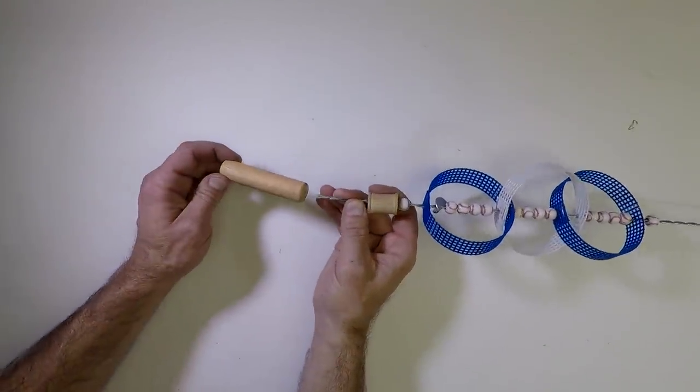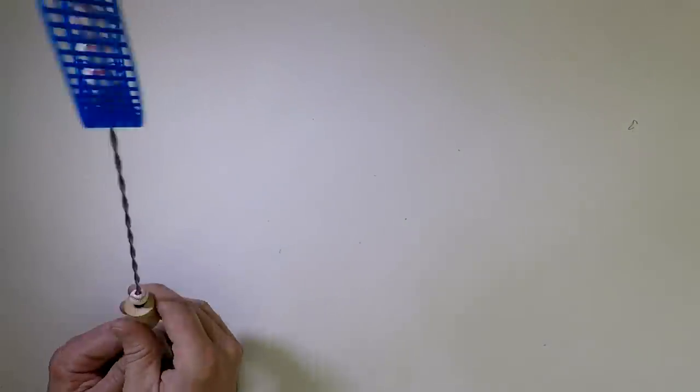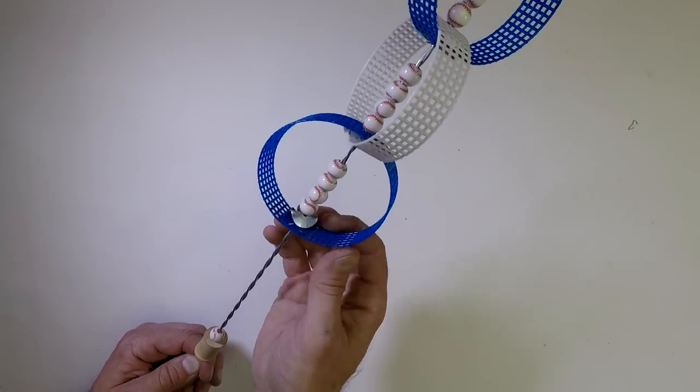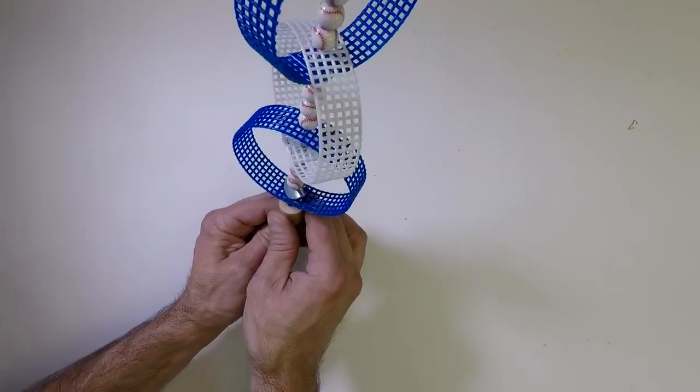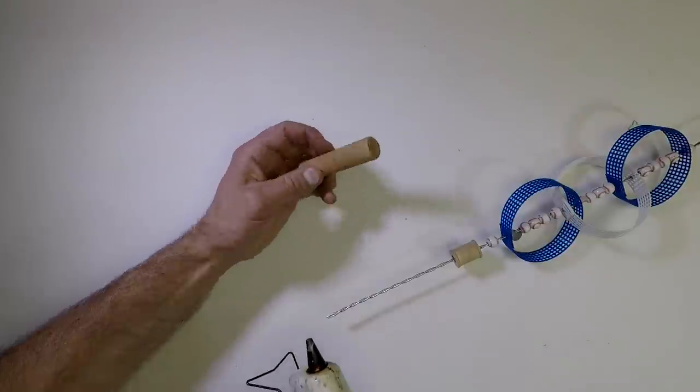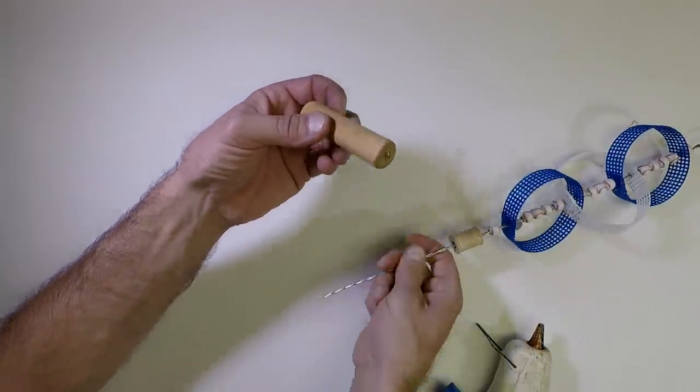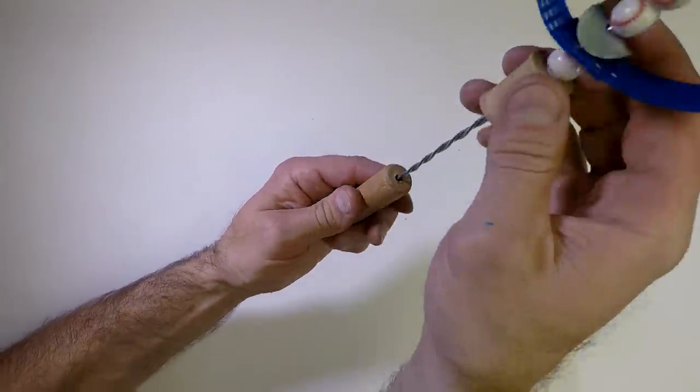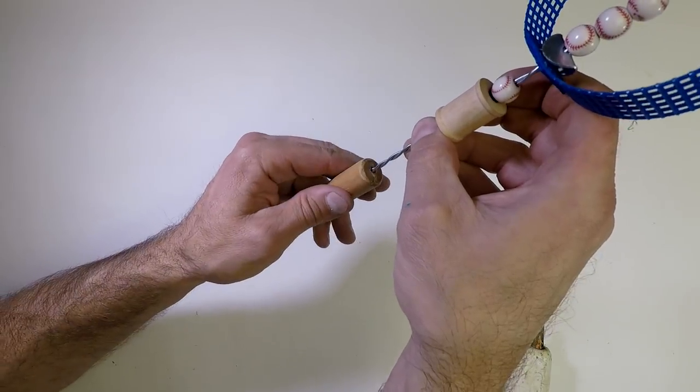Now, before we glue in the handle, we want to make sure that the toy actually works. So, this should slide down. If it doesn't, you may need to drill your holes slightly larger, or you may need to make an adjustment to your washer to get it to slide correctly. This one here actually looks pretty good. So, we'll go ahead and put some glue in there. We'll take our hot glue gun. Let it dry. Wipe out any excess. Let it dry.